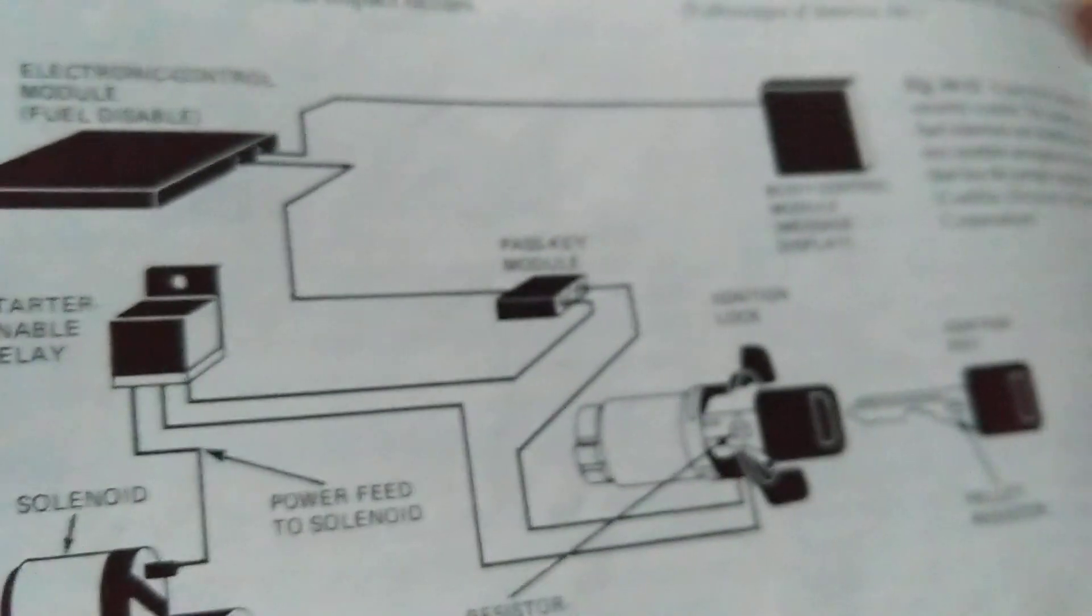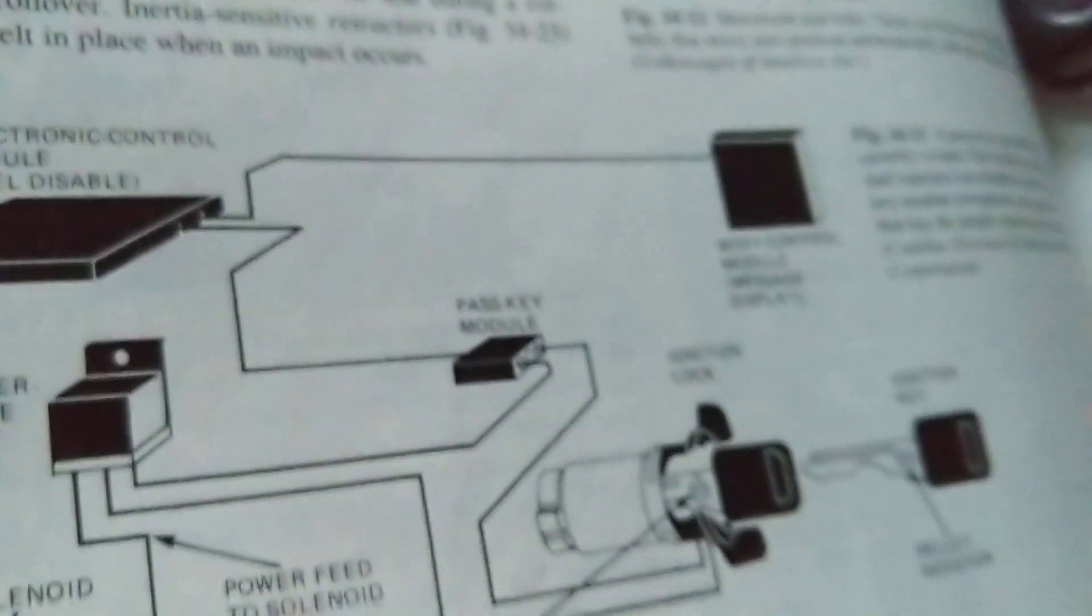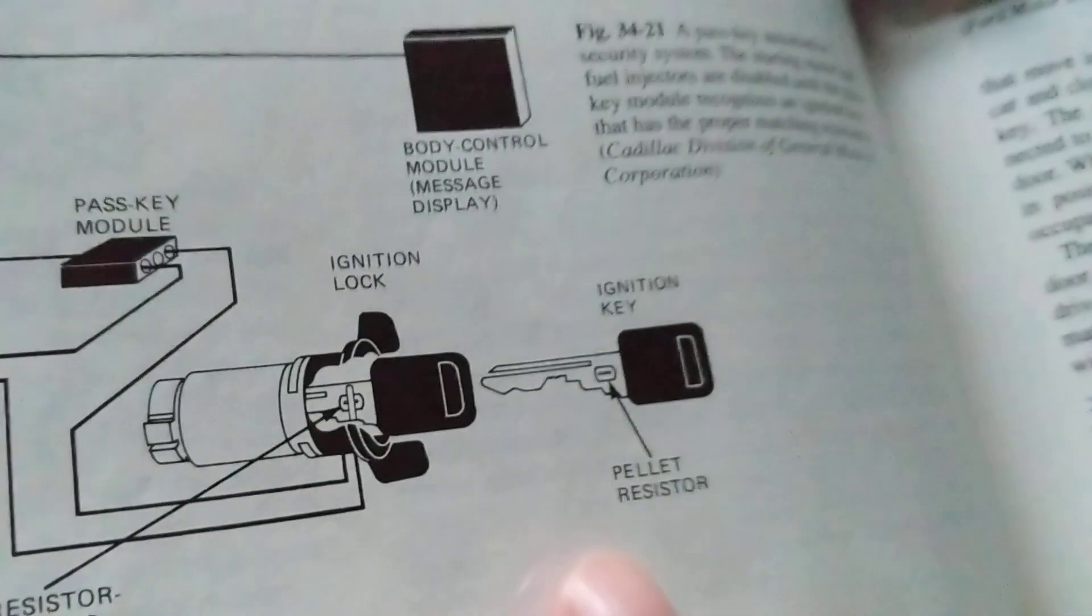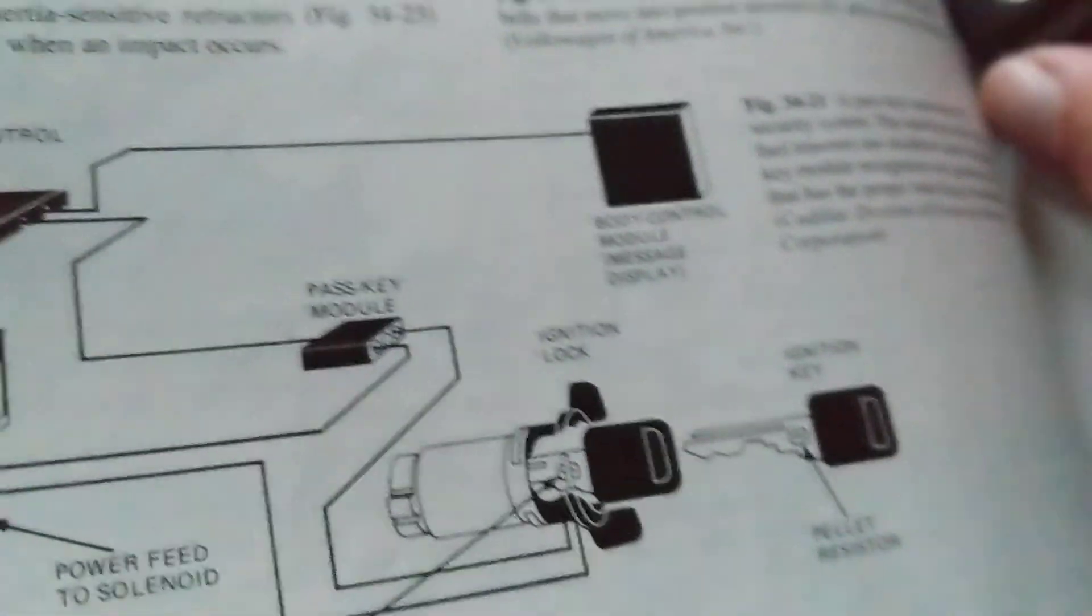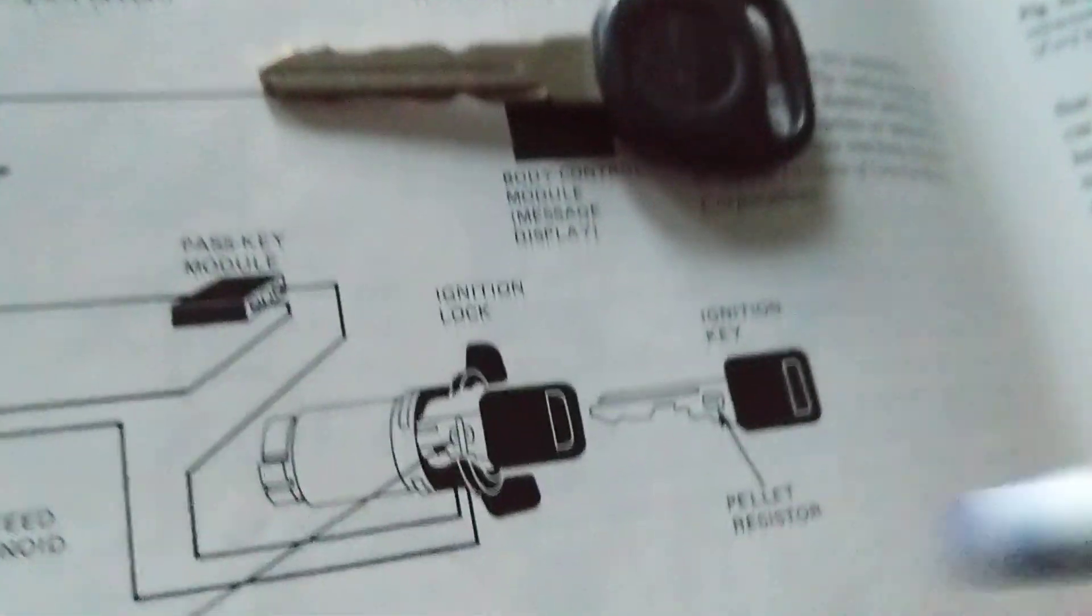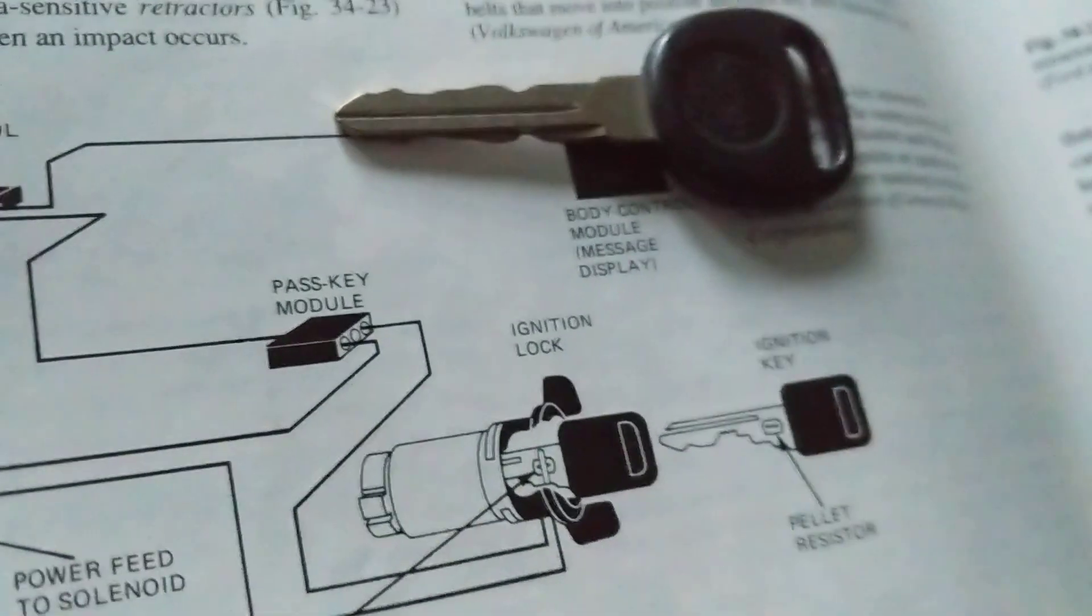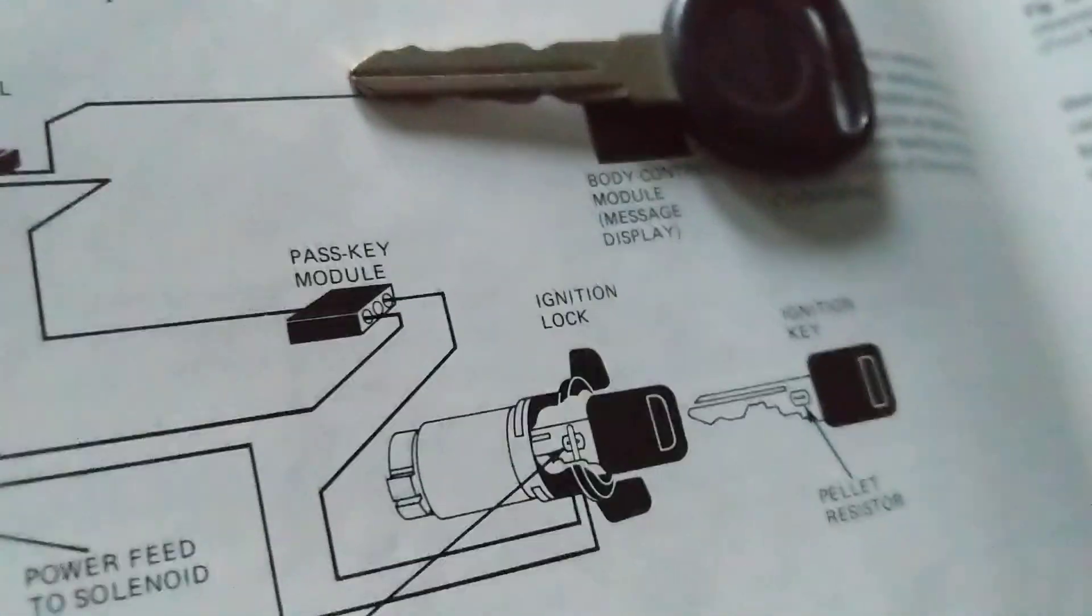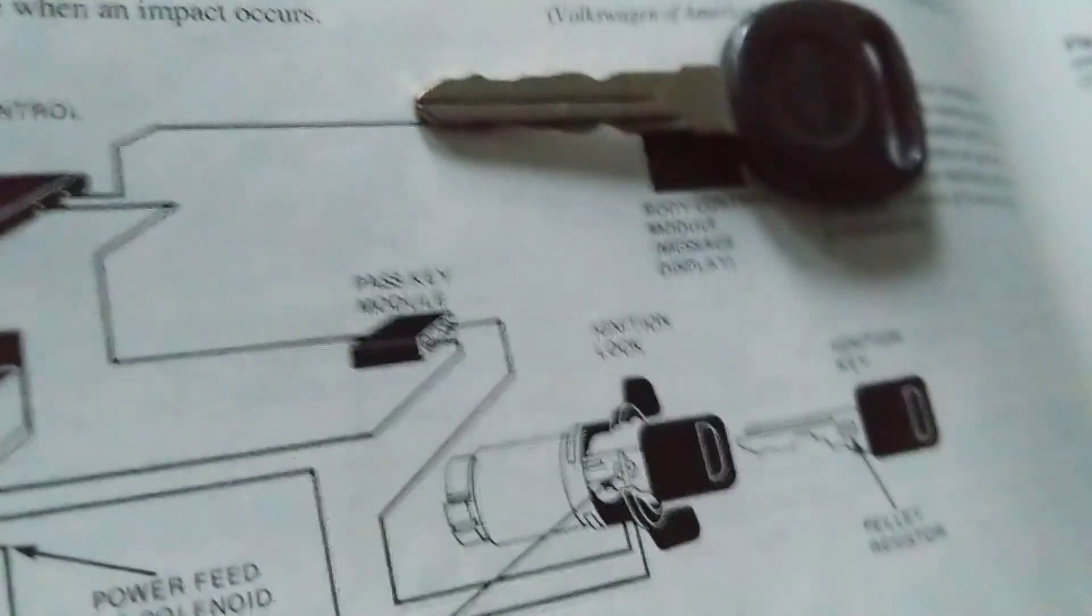Obviously the key that we use has a chip in it with all the information. Now in the olden days, this is a picture of it, something called a pellet resistor onto the key. So if this is the key, it will be around here. We have different values of resistors that would match what the car needed.